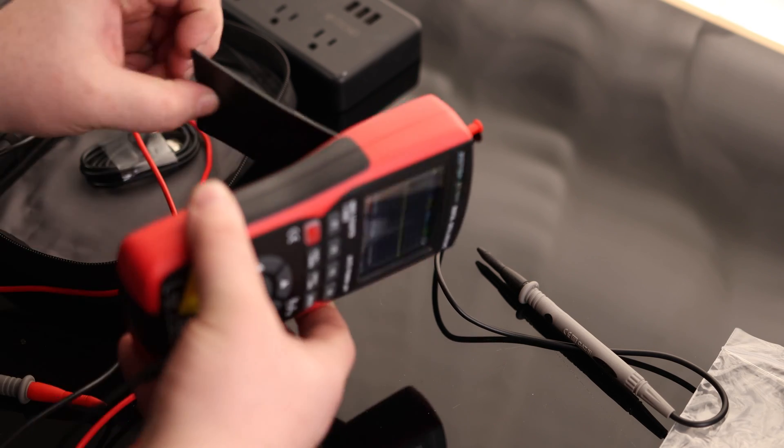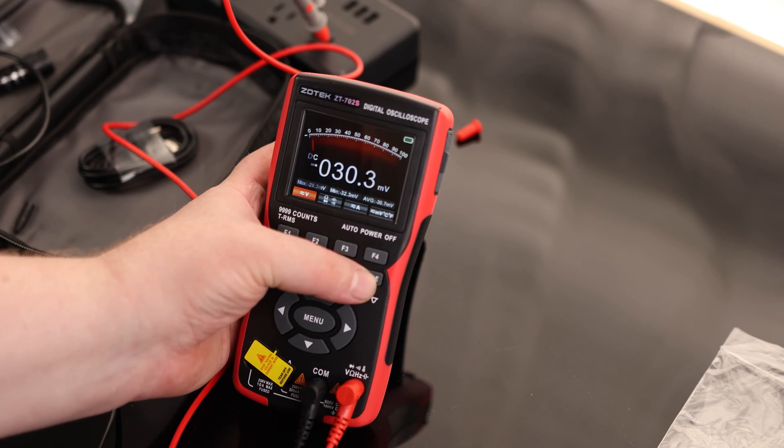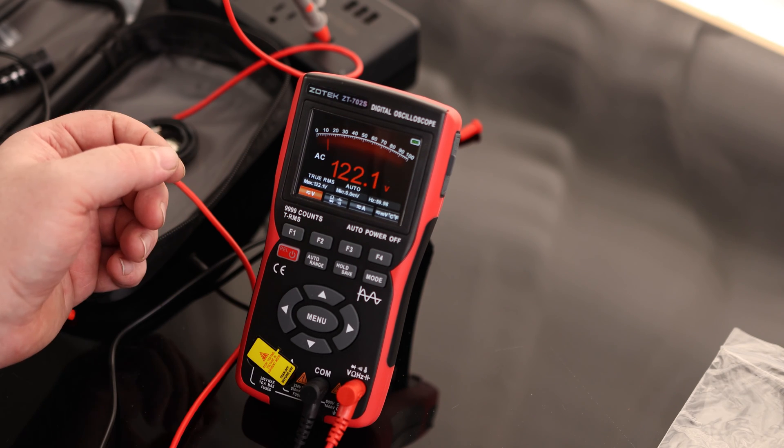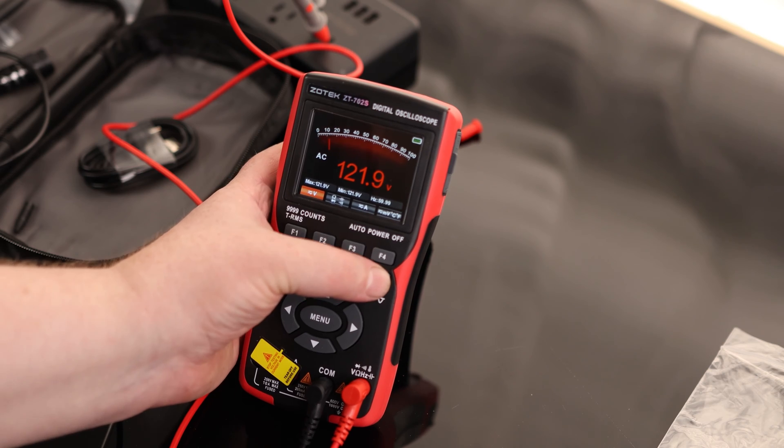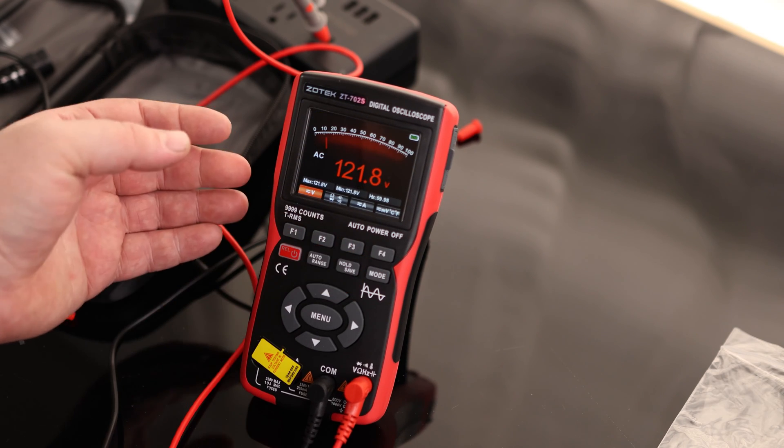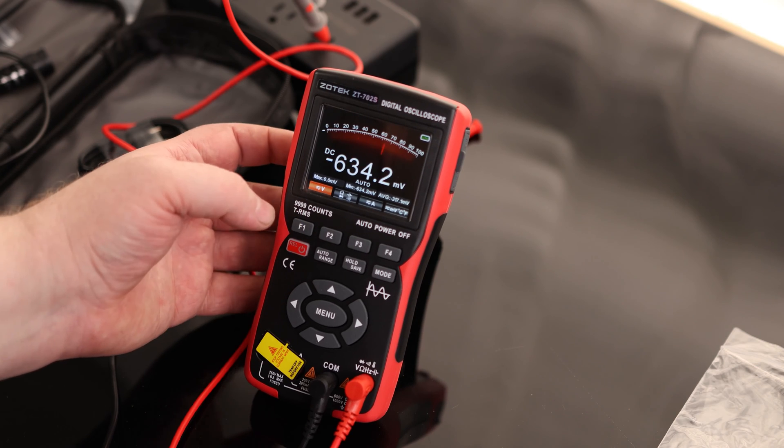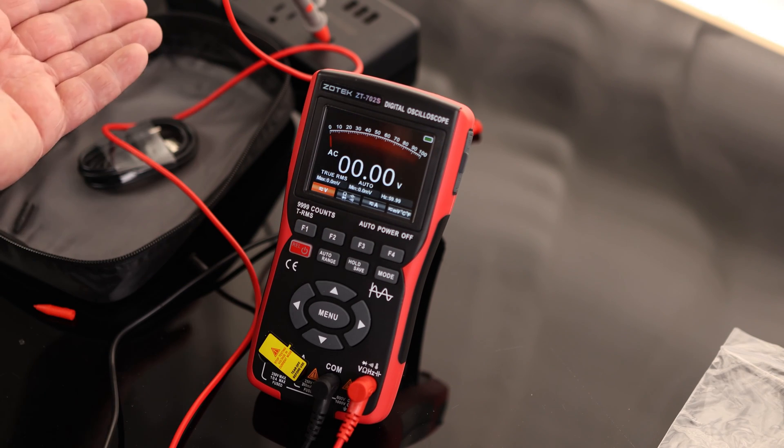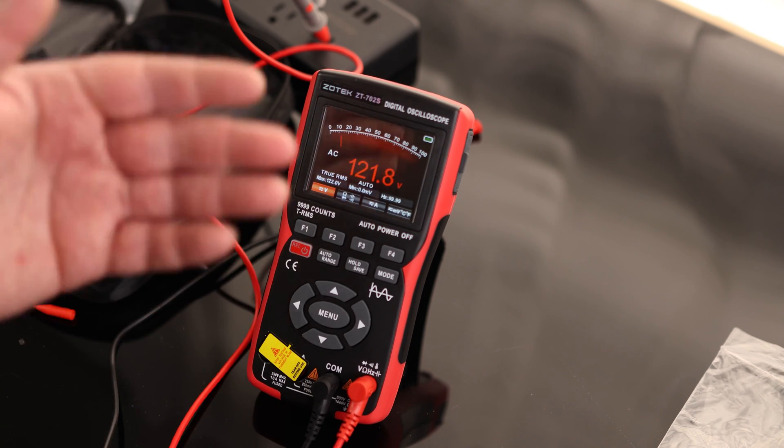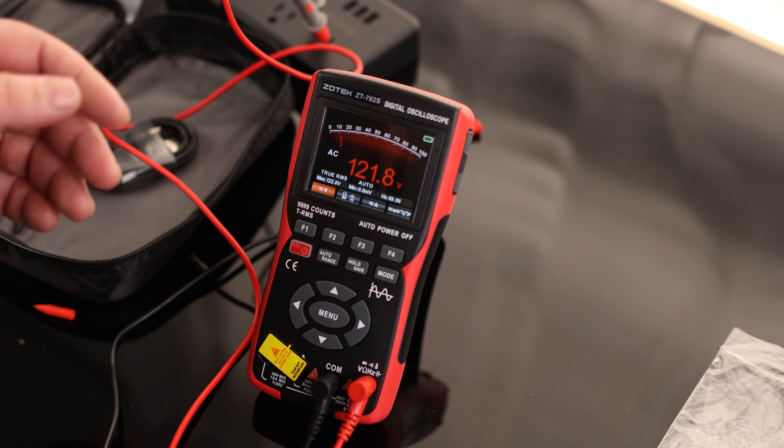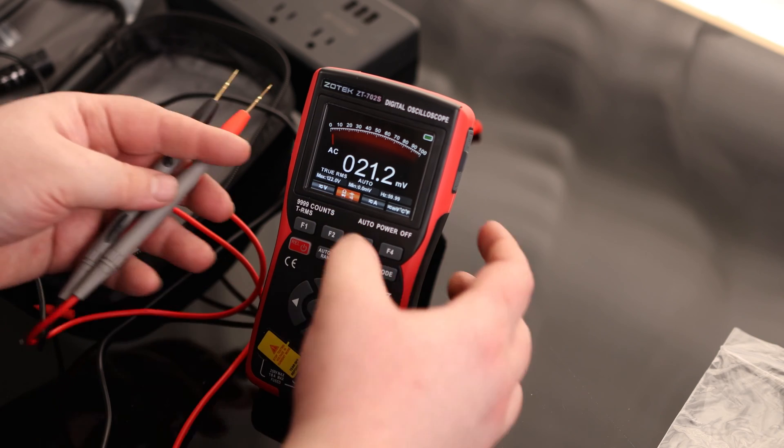Oh, cool. We do have a stand. Cool. So mode we can use to change between the oscilloscope function and the multimeter function. And then right here we can see that F1 will change the voltage. So we've got DC. We've got AC. Obviously this is AC. It does take it a second to read, but I'm not really too surprised by that. Just having the capacity to do all of that is actually pretty amazing.